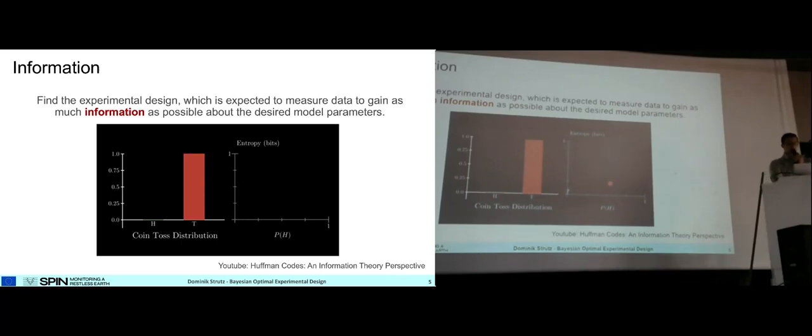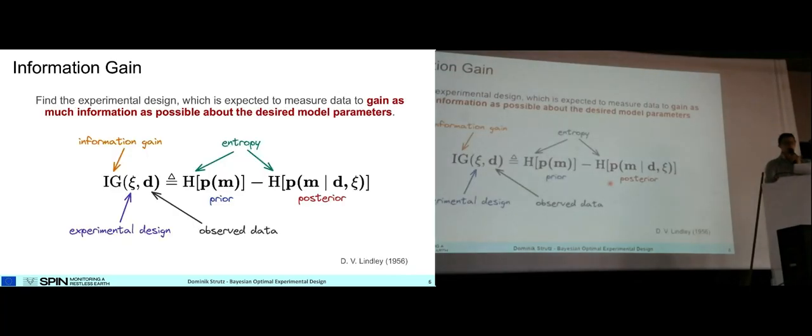If we go back to the description of the optimal design process, how can we measure a gain in information? We can define this gain in information, which depends on the experimental design and the observed data, as the difference between the entropy of the prior of our model parameters and the posterior. But this information gain still depends on the observed data, which we don't have if we haven't done our experiment.